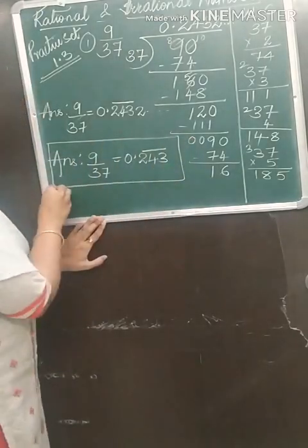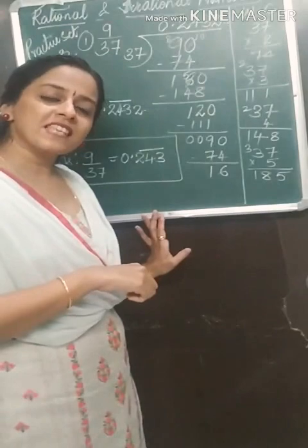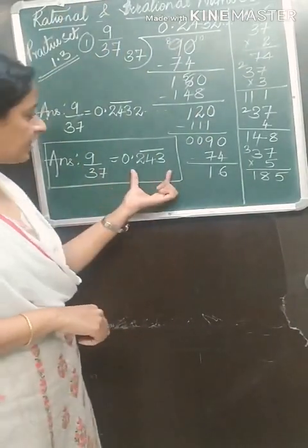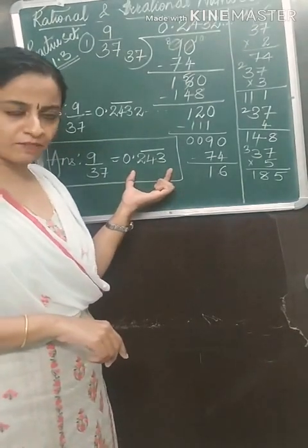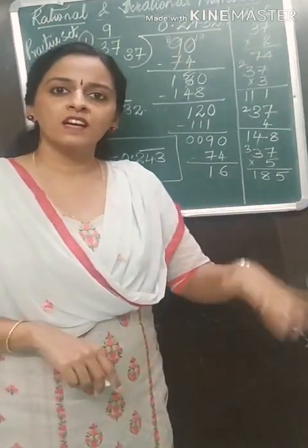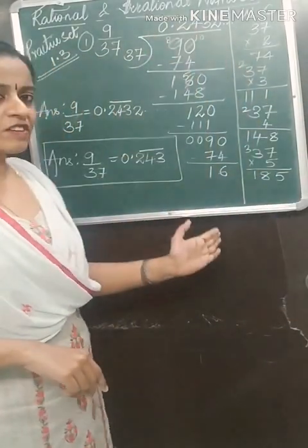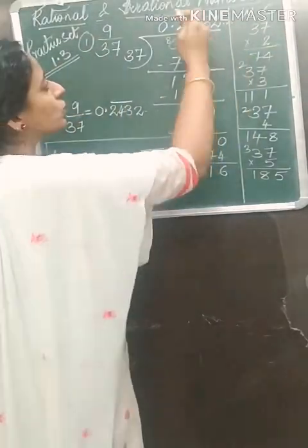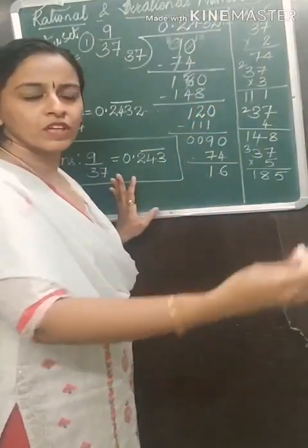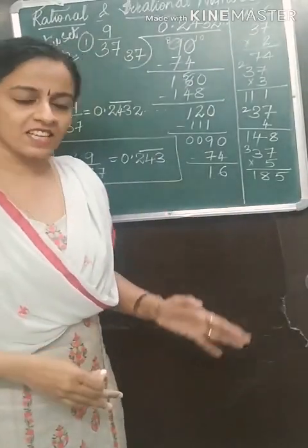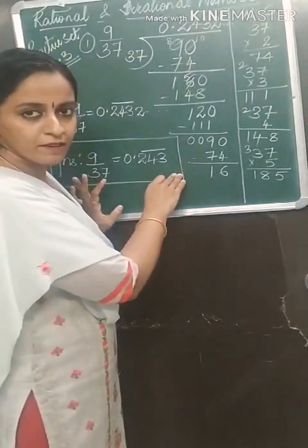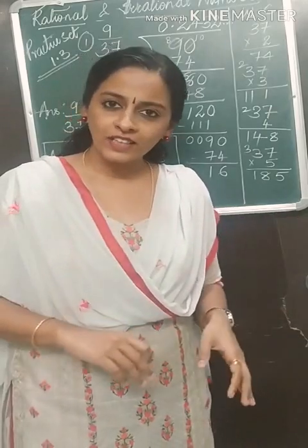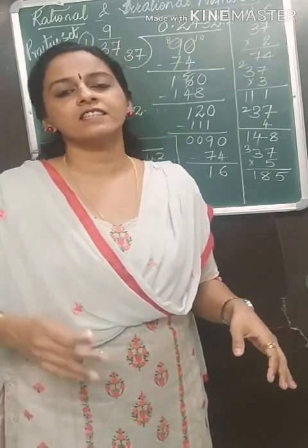From this sum, you can represent a rational number in decimal form. That decimal form is recurring — the division is not going to end; you will keep getting 2432, 2432. The digits will recur. Such recurring decimal form is called non-terminating recurring decimal form — it is never ending.